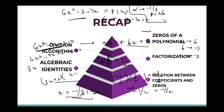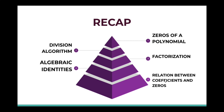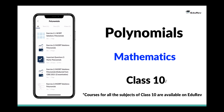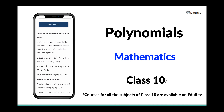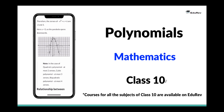We have reached the end of our discussion. Hope you found that helpful. Let's take a quick recap: we studied about zeros of a polynomial, factorization, division algorithm, algebraic identities, and the relationship between coefficients and zeros. Finally, we solved some questions to analyze our understanding. You can visit EduRev to attempt the respective tests to check your understanding on the topic. Stay tuned for more amazing videos. Thank you.